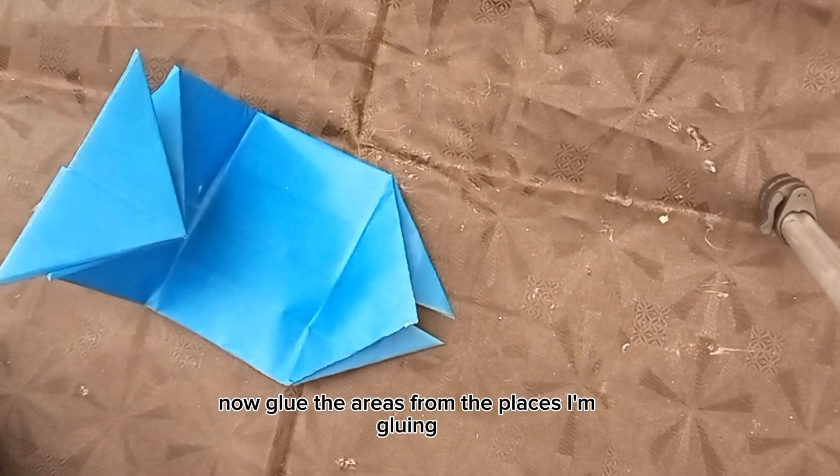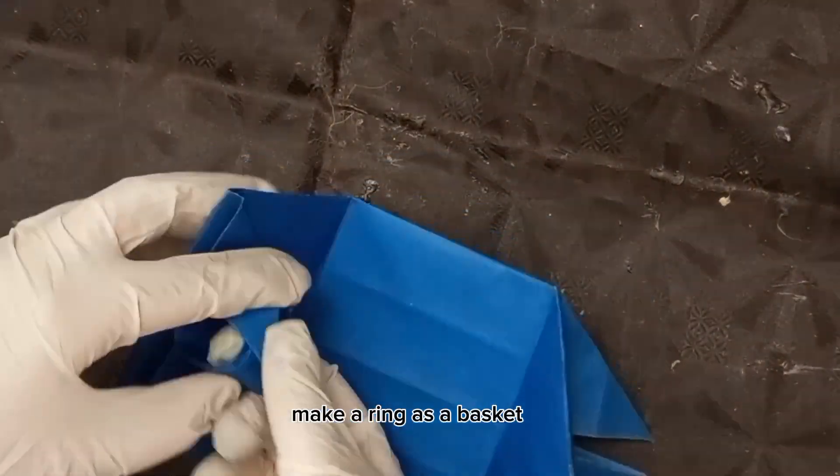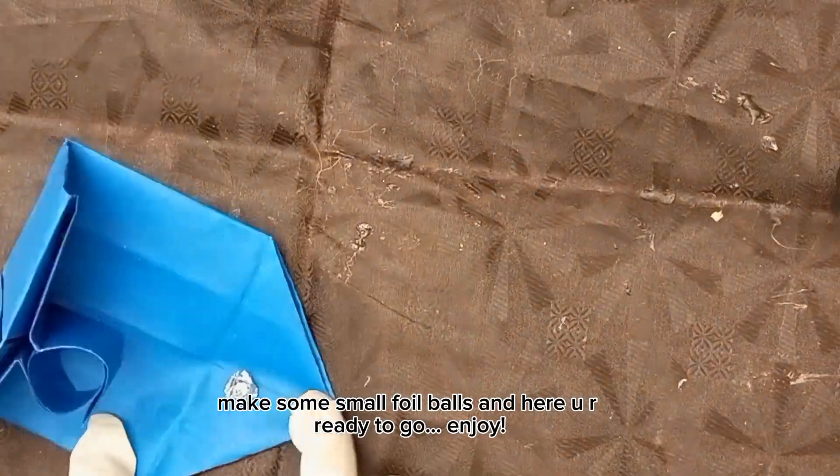Now glue the areas from the places I'm gluing. Make a ring as a basket. Make some small foil balls and here you are ready to go.